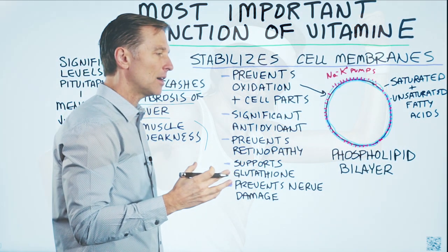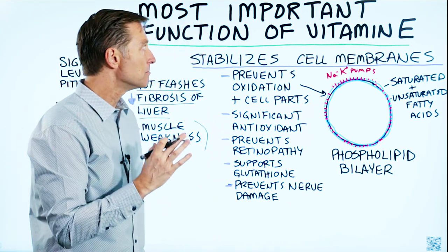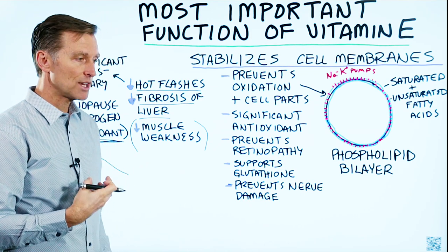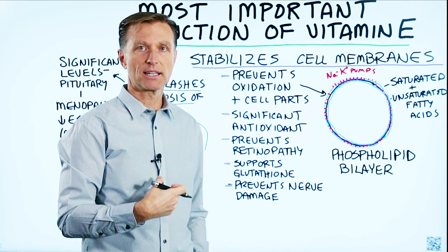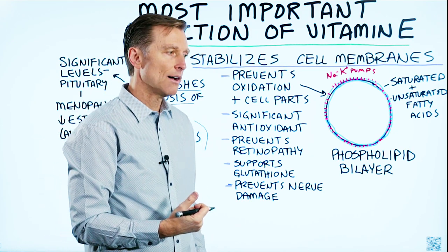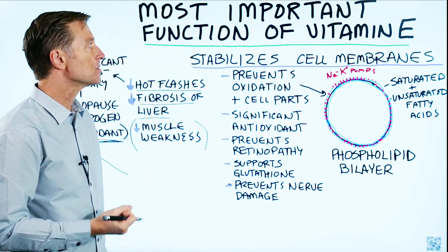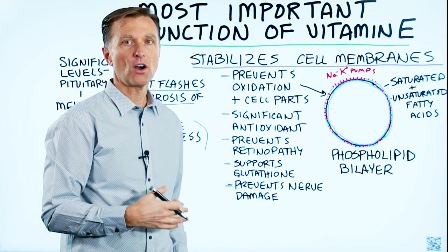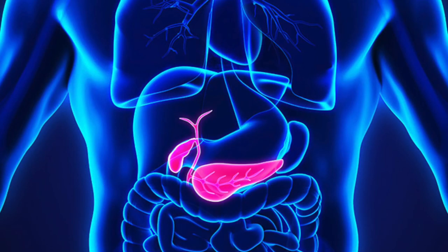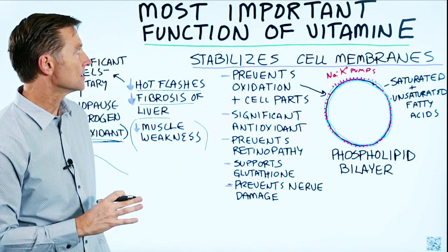Typically, people are not deficient in vitamin E because of their diet — it's mainly because of absorption. Either they had some alteration in the digestive system, whether gastric bypass, surgery, or scar tissue in the gut creating a lack of absorption, or they don't have a gallbladder, or they have sludge in the gallbladder so they don't have enough bile to help absorb it. They could be deficient in the diet, but typically it's other causes.